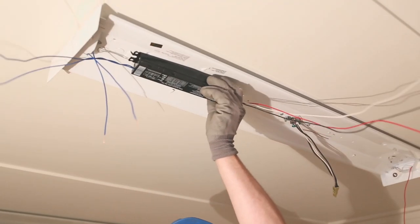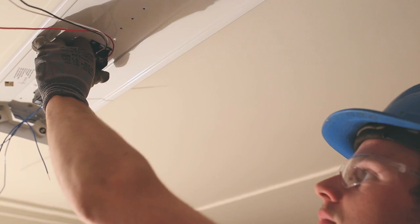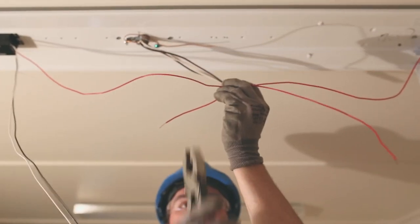You can then just repeat your process backwards by putting the ballast back into the light, cut the wires on the ballast to the right length. Strip those wires and then just match your colors together.